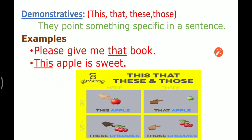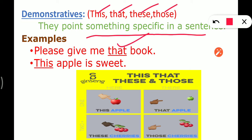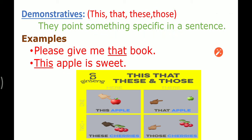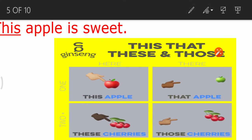Let's move to the next one. Now demonstrative pronouns. Demonstrative pronouns are this, that, these, those, and what do they do? They point something specific in a sentence. For example, please give me that book. This apple is sweet. Now here I have put a picture here. Let me make it visible to you.